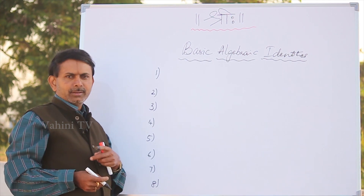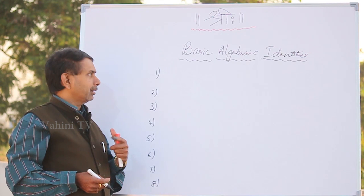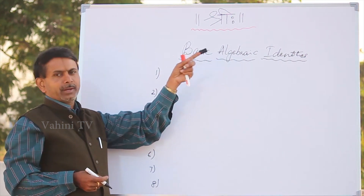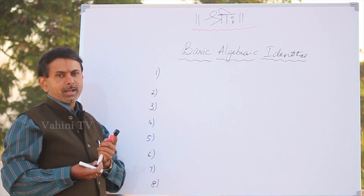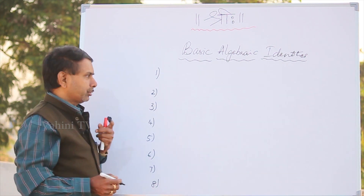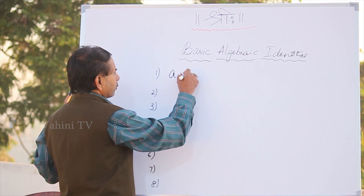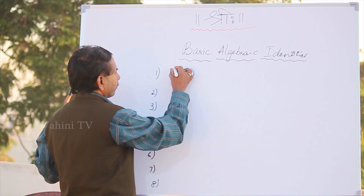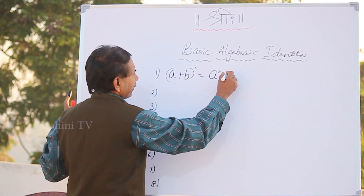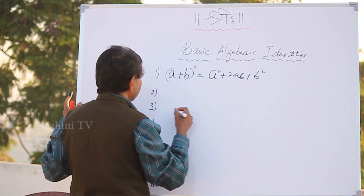Yes children, happy day further. We have discussed basic algebraic identities. We have to do more formulas. The first one was: a plus b whole square. What was the answer? a squared plus 2ab plus b squared.